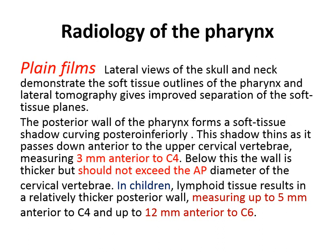Radiologically, the lateral X-ray of the skull and neck demonstrates the soft tissue outline of the pharynx, and lateral tomography gives improved separation of the soft tissue planes. The posterior wall of the pharynx should be 3mm anterior to C4 and should not be more than the width of the adjacent vertebrae. In children it is thicker, reaching 5mm adjacent to C4, and about 12mm adjacent to C6.